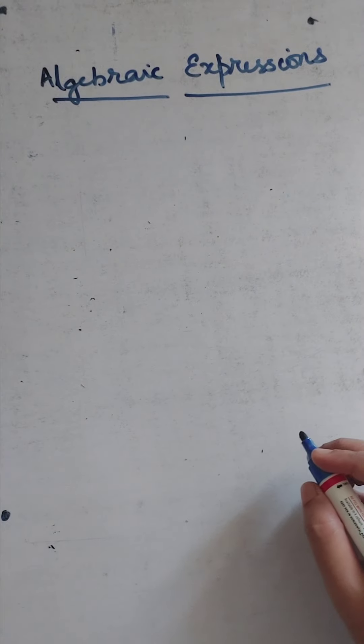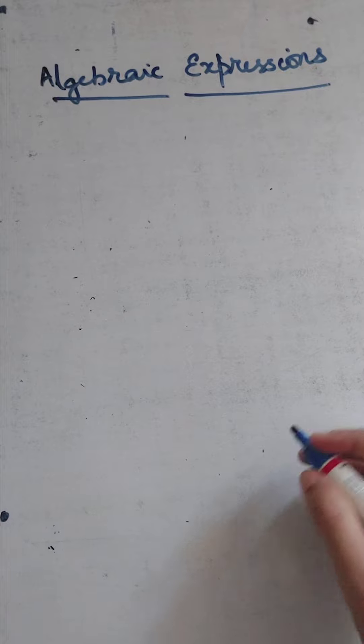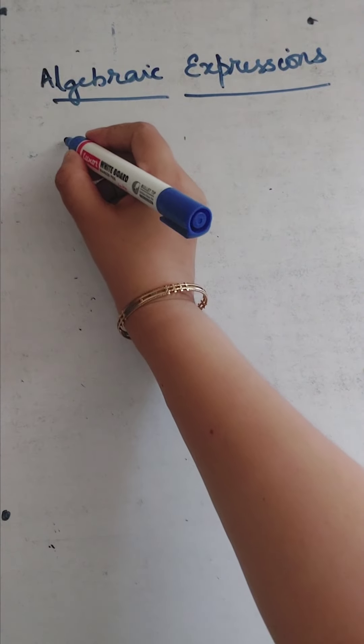Hello children. In the last video we were seeing about algebraic expressions, and we saw what are constants and variables, what is an algebraic expression, and the terms of an algebraic expression. We also covered factors, coefficients, and like and unlike terms. Hope you are all clear with this. Now today we are going to see about four types of expressions.